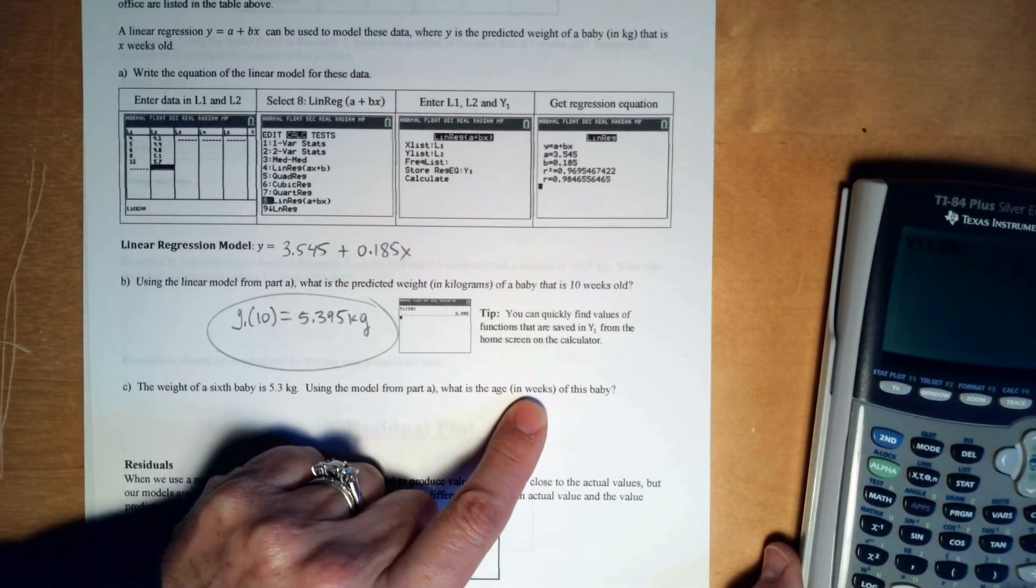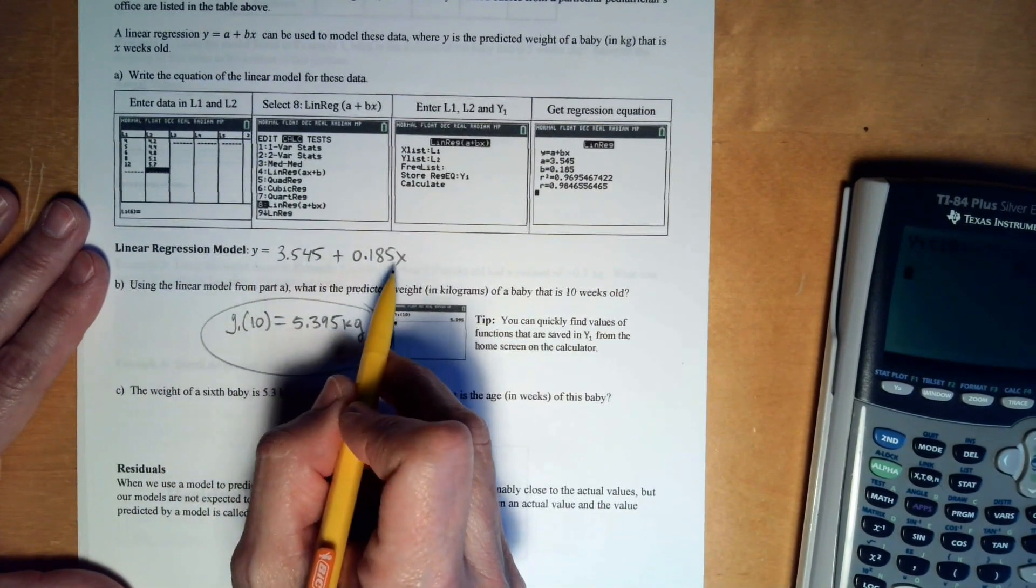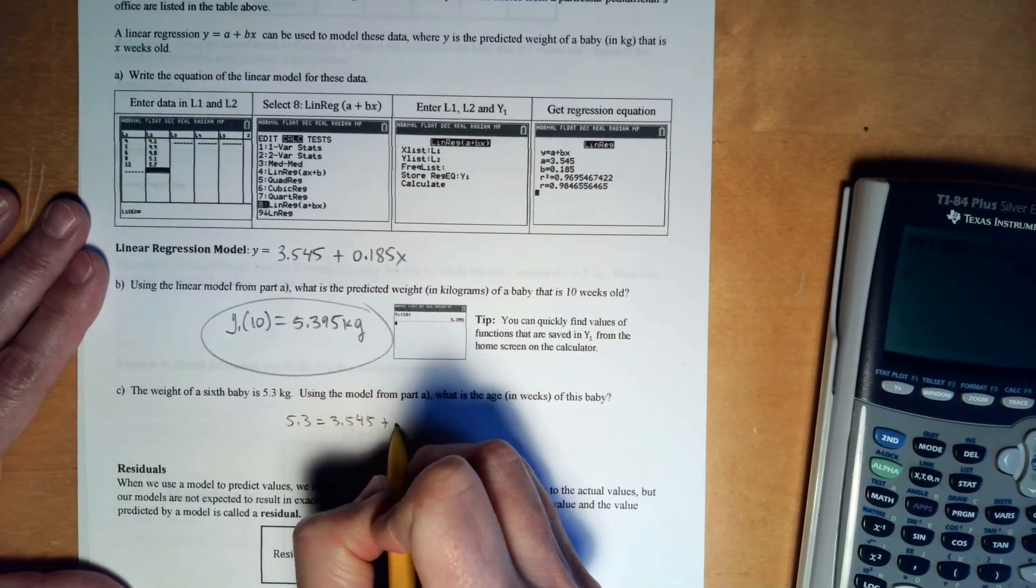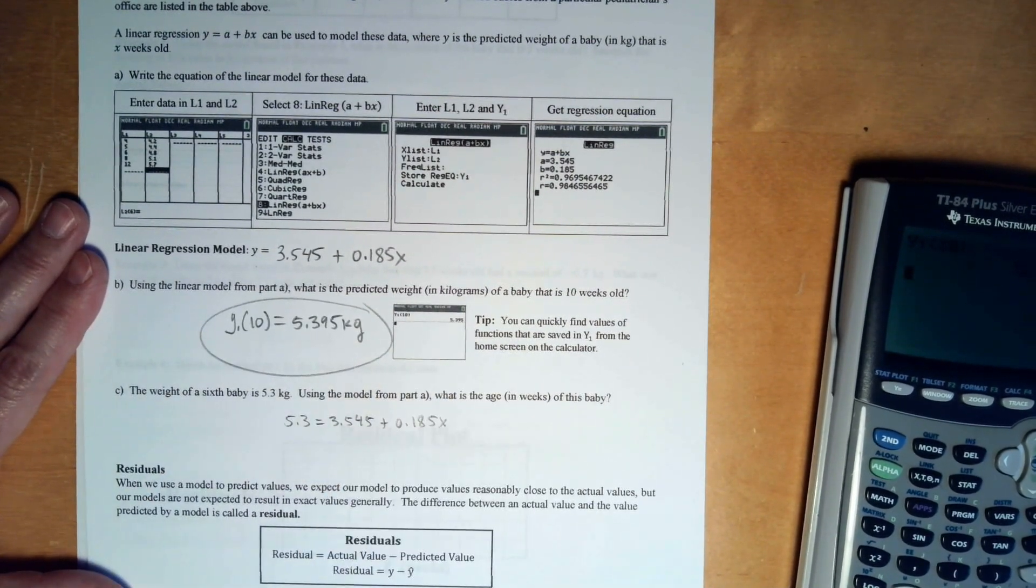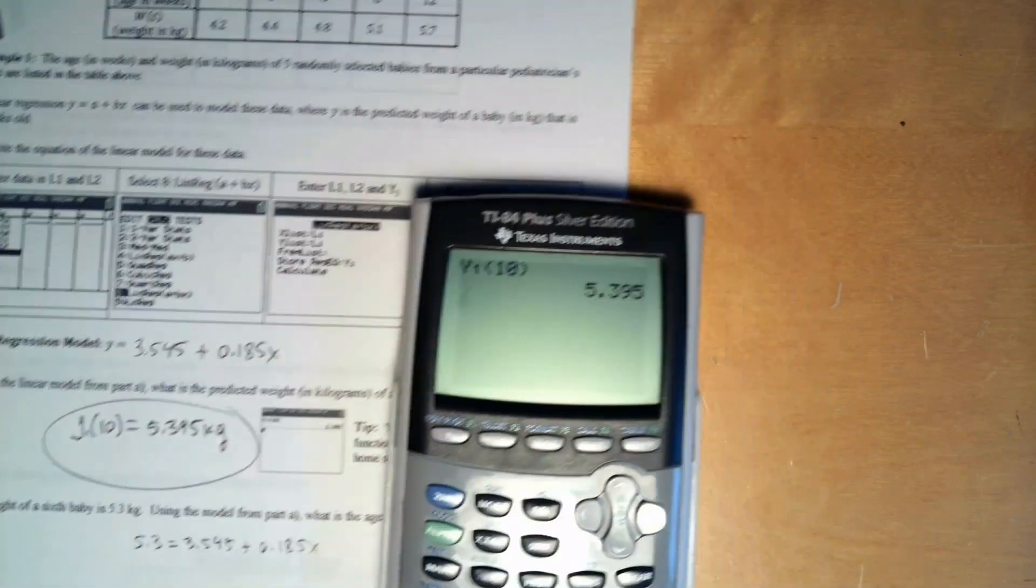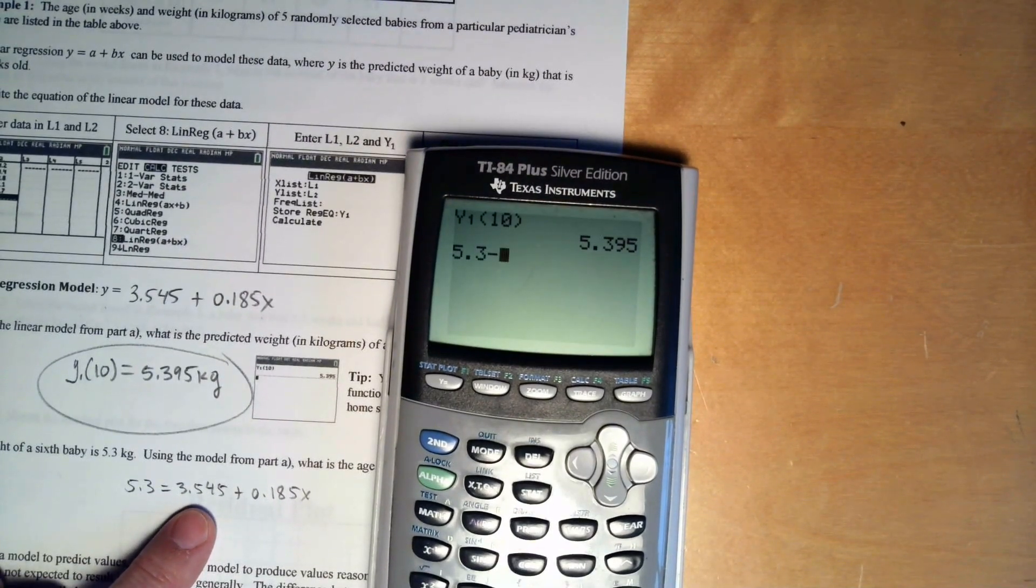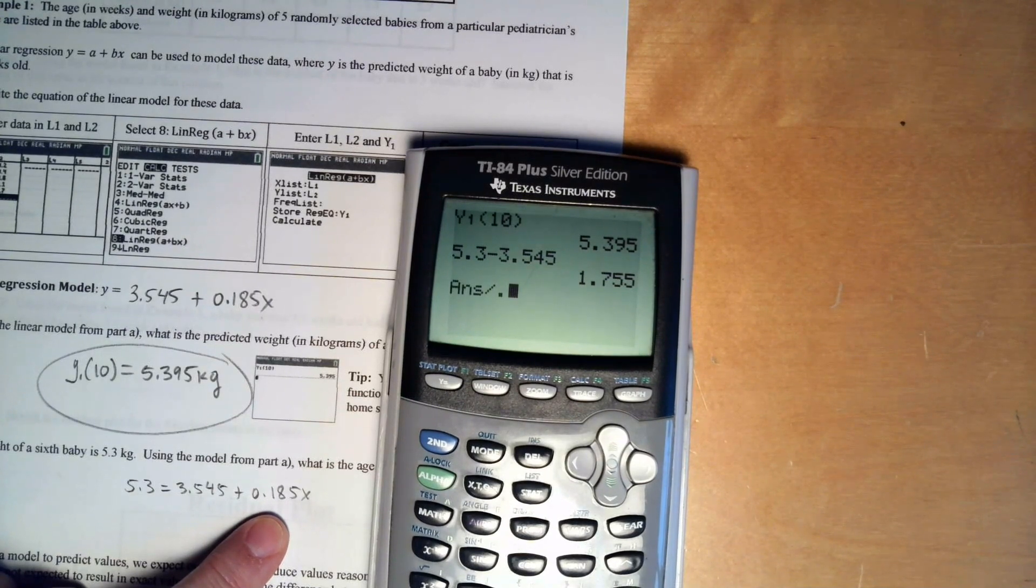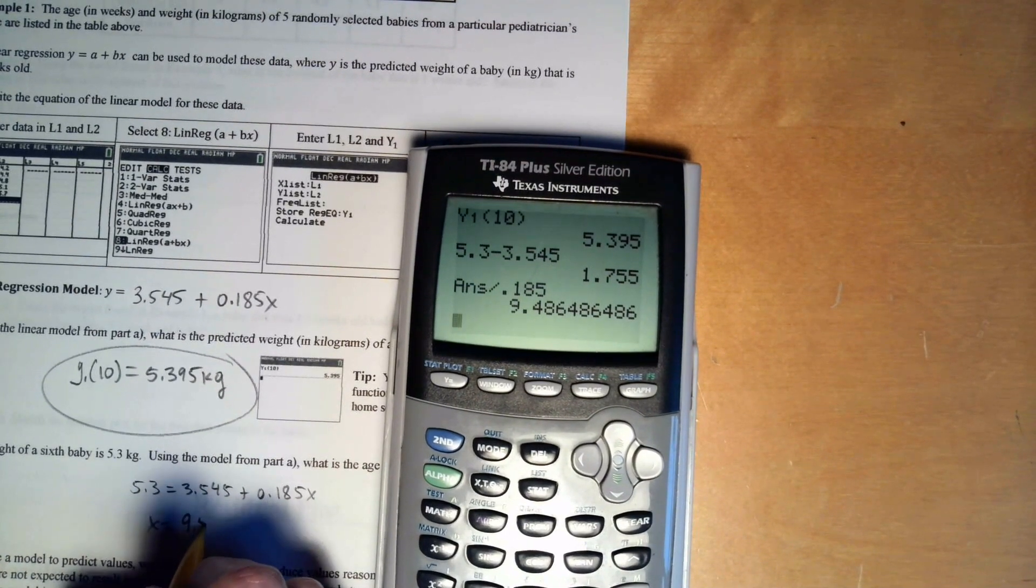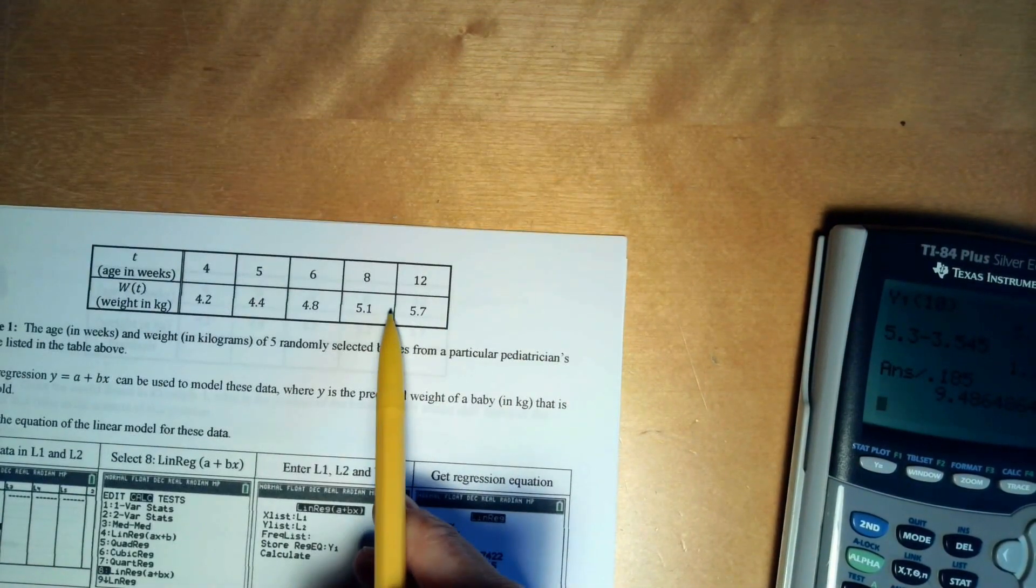Use the model to figure out what's the age in weeks. So now we're just kind of going backwards a little bit. So what we're doing here is we know the answer and we want to know what x value made that. So we're going to have to take 5.3 and set it equal to 3.545 plus 0.185x. So I'm going to need 5.3 minus 3.545 and then divide it by 0.185. And so that baby must be 9.5 weeks old. So x equals 9.5 weeks. And it makes sense, right? 5.3 is like right in here, so 9 weeks.